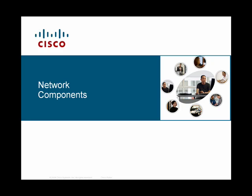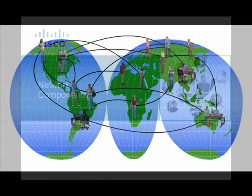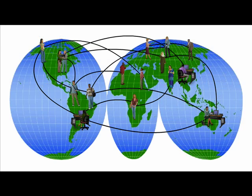Welcome! This video defines the key components of a data network and demonstrates how data communication takes place over a network. In order for us to send messages from one location to another, whether it's an instant message or an email, we rely on the web of interconnected networks. These data networks vary in size and capabilities, but all networks have a few basic elements in common.